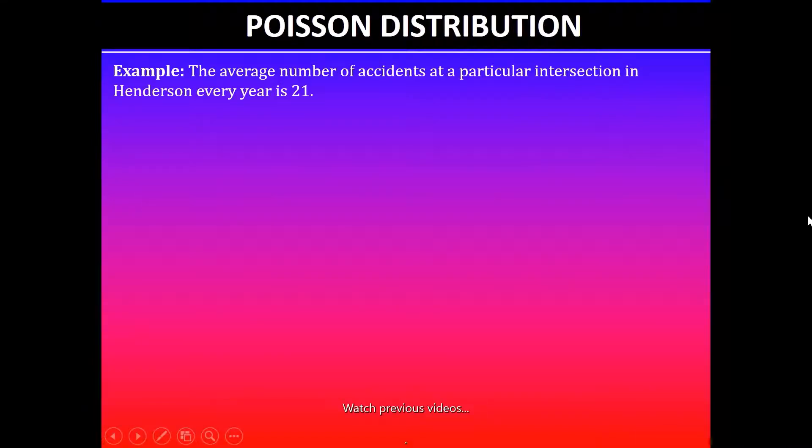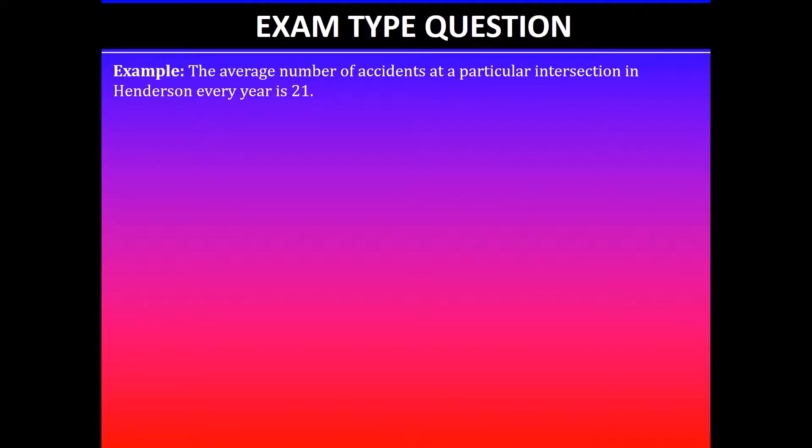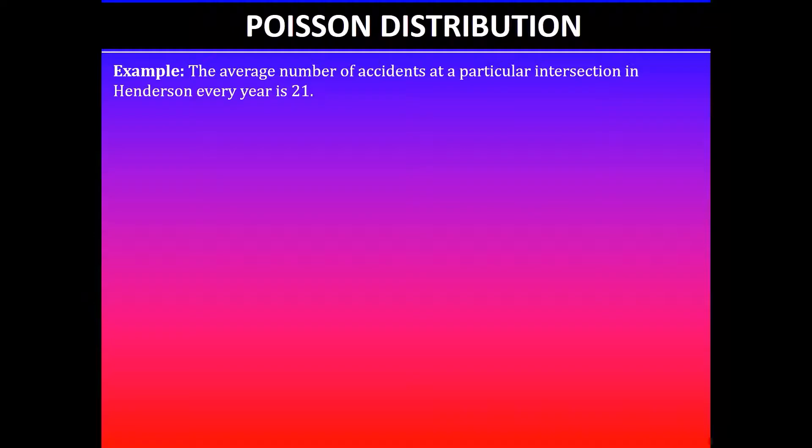This is the second part to the previous video where I've done part A of this problem. The question states the average number of accidents at a particular intersection in Henderson every year is 21, and the first question says calculate the probability that there are exactly two accidents there this month. I've already done this part in my previous video, so if you haven't already, please check that one out.